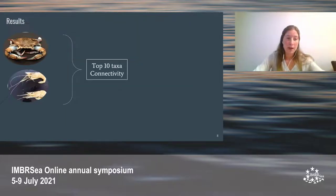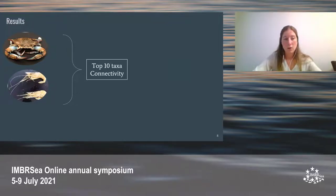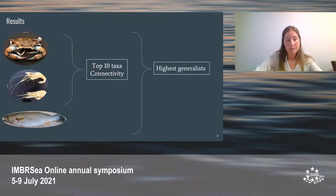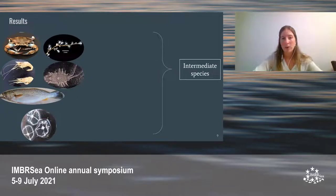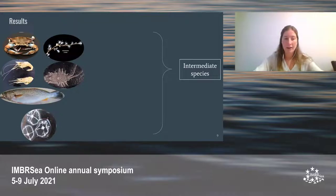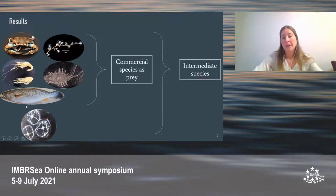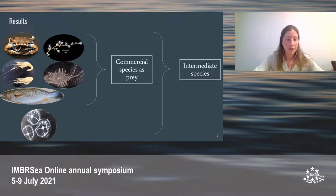Callinectes sapidus and Palaemon macrodactylus are among the top ten taxa for connectivity, and together with Cynoscion regalis are among the highest generalists. All non-indigenous species are intermediate species, meaning they are both predators and prey at the same time. All of them, except Blackfordia virginica, have among their prey a highly valuable commercial species, which needs to be taken into consideration.